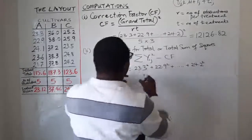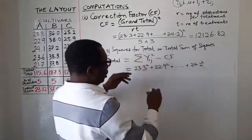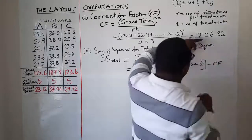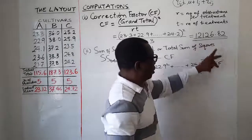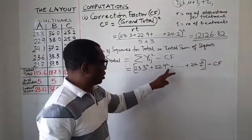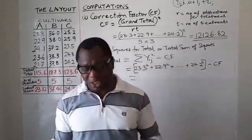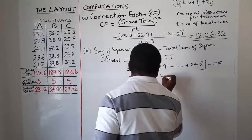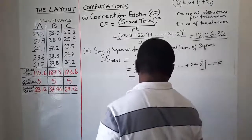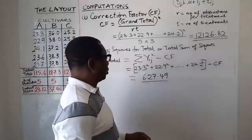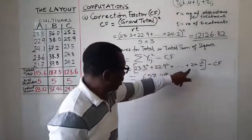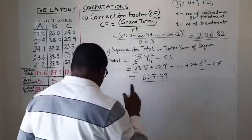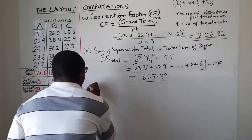So we set this equal to 23.3 squared plus 22.9 squared, all the way to 24.2 squared — there is no divisor here. Add up everything and then subtract your CF. The value you already have for CF is subtracted from all of this, and in this particular example our SS total equals 627.49.